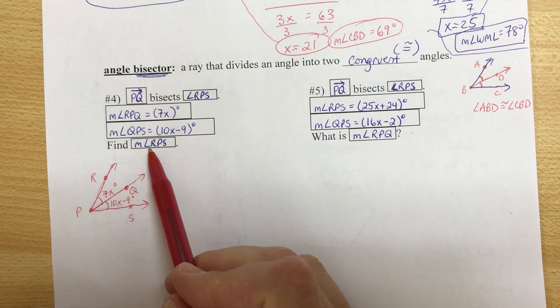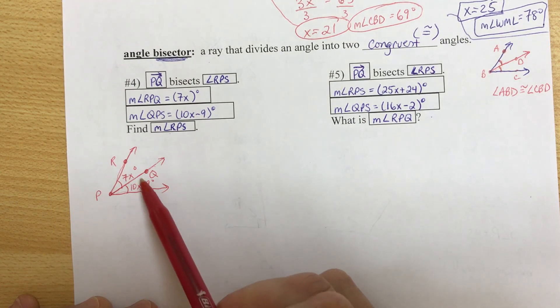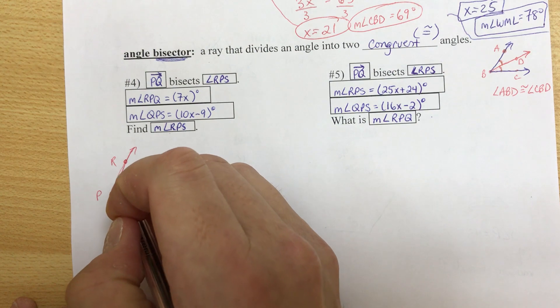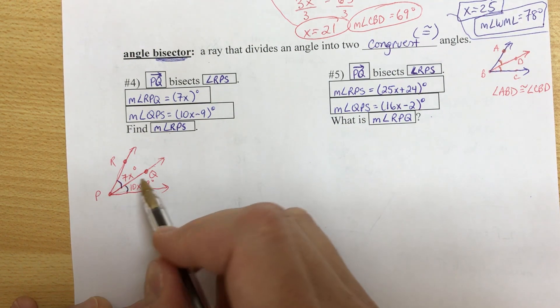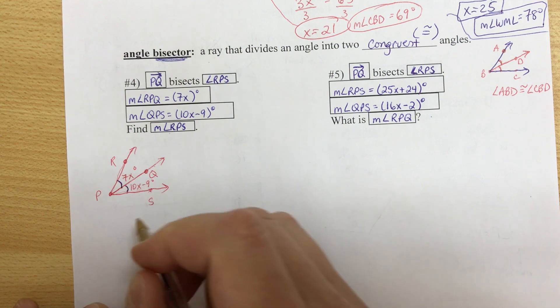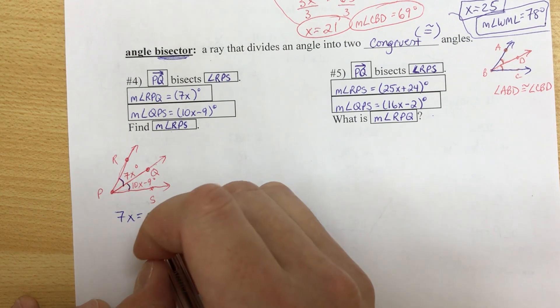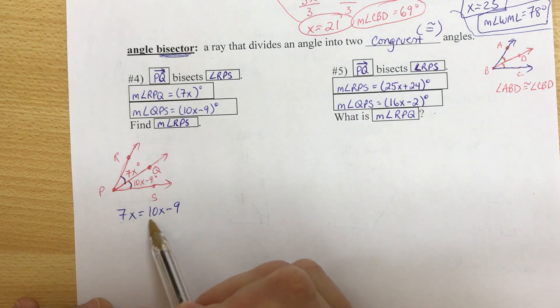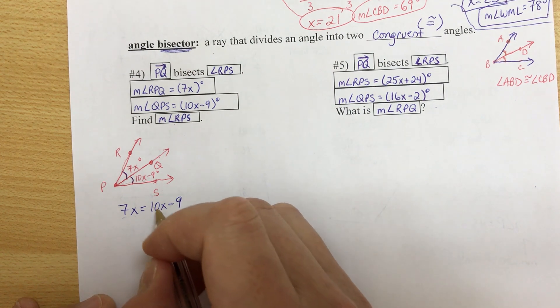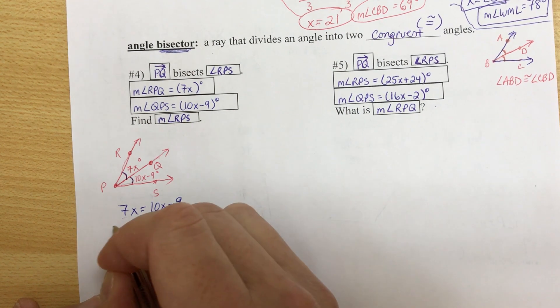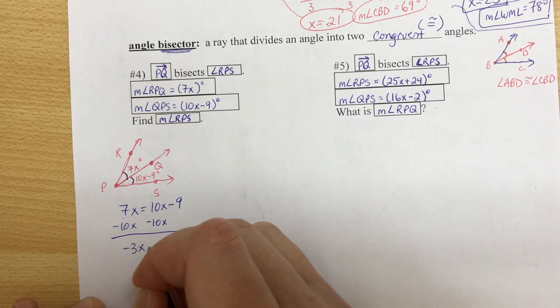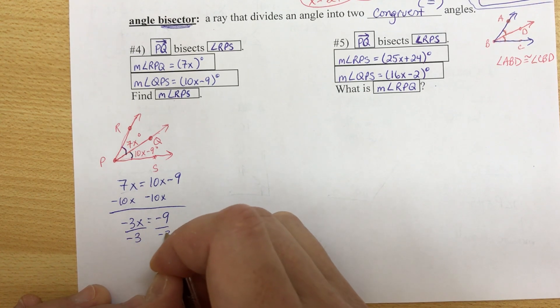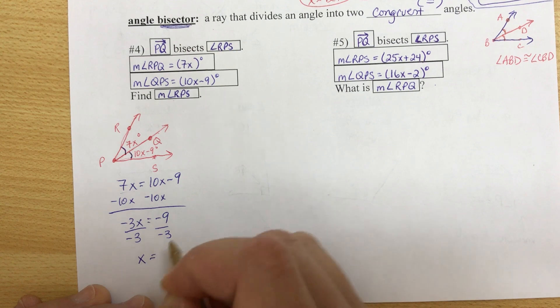Find the measure of angle RPS. So what we have to do is we have to look for some kind of relationship so that we can make an equation. Well, we label these congruent. That means their measures are equal. So we can say 7x equals 10x minus 9. If angles are congruent, their measures are equal. Now to solve this, I'm going to move 10x to the other side by subtracting. So we get negative 3x equals negative 9. And then the last step is divide by negative 3. So that becomes positive 1x equals 3.